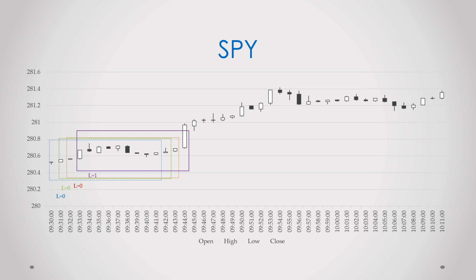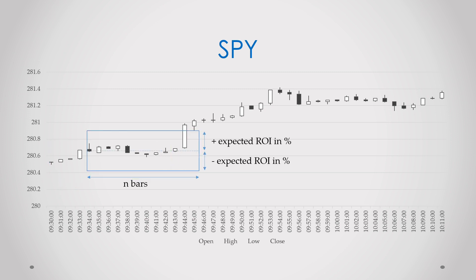If the price goes out of the window, the first bar in the window will get the label. Now, before generating the labels, let us define the window's parameters. The idea is pretty simple, but selecting the best window size and barrier levels is a challenge. That's where I have actually been stuck for some time, and I don't think that I have found a good solution for it.